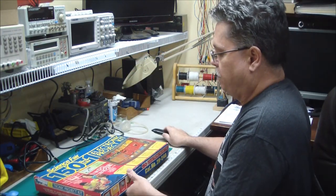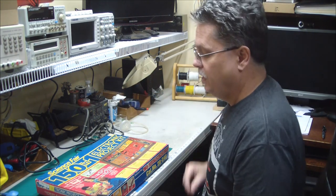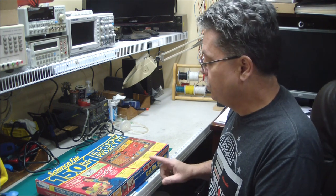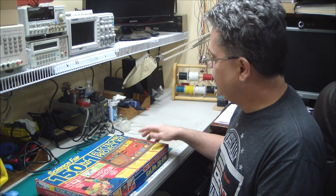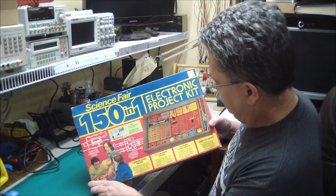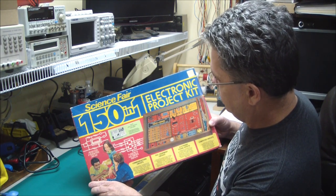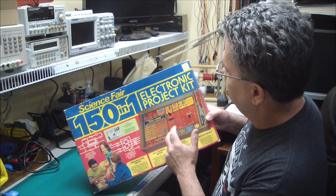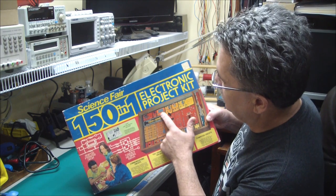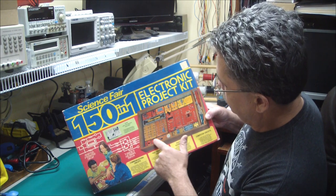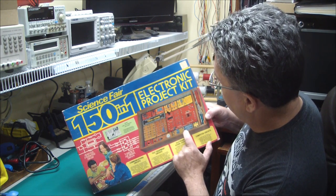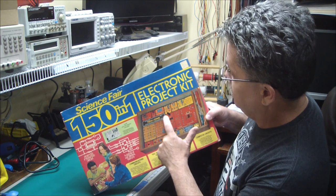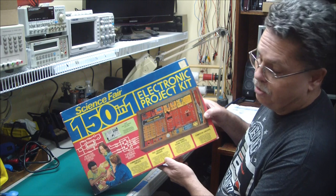Now, they made two different project kits in this time frame. There was a 75-in-1 and a 150-in-1. I can't remember for the life of me which one I had. This 150-in-1 is a little fancier. It has an LED display. I remember mine had the resistors and capacitors and transistors and diodes. A pot, a transformer, a meter, a relay, the inductor down here for making a radio, and some batteries. But, I don't remember it having an integrated circuit or the LED. I do know it had a CDS cell and a solar cell.